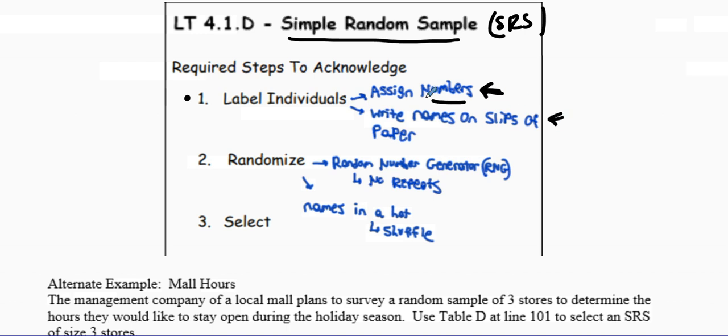Next thing is that you want to use some way to randomize it. So you label them and then you need to randomize it. Usually we're picking with a random number generator, RNG, and usually there's no repeats. Other times we're taking names out of a hat, make sure that we shuffle them. We're also going to talk about using Table D.